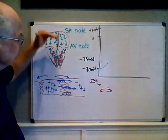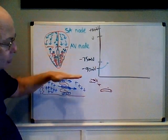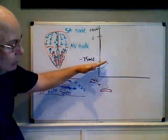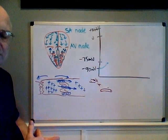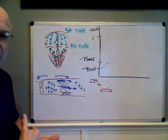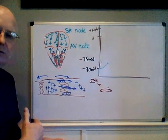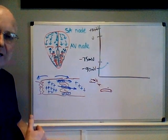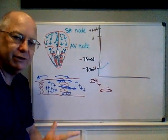The SA node, because it naturally leaks sodium and hits threshold, actually causes the heart to contract somewhere between 70 and 80 beats per minute for the average healthy adult.